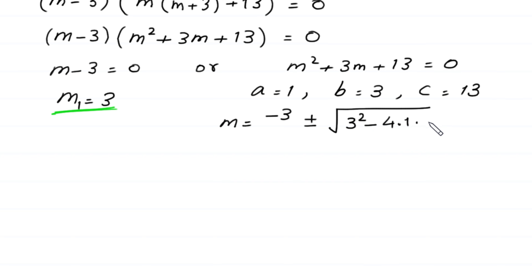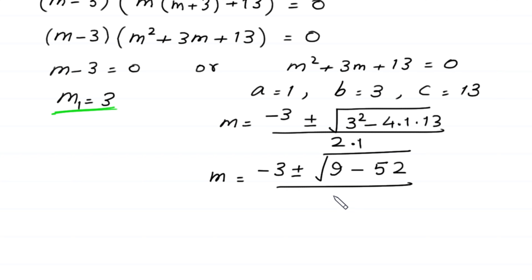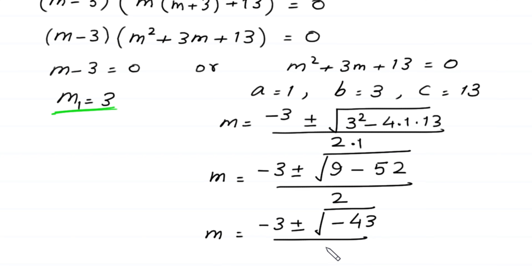Substituting the values: m equals negative 3 plus or minus the square root of 3 squared minus 4 times 1 times 13, divided by 2 times 1. That gives negative 3 plus or minus the square root of 9 minus 52, divided by 2, which is negative 3 plus or minus the square root of negative 43, divided by 2.